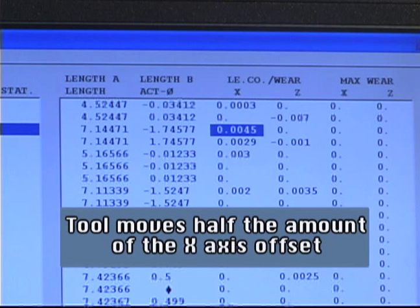The same is true of X-axis offsets on the Integrex. The tool moves only half the amount entered in the wear offset. This is important to remember when adjusting cross-drilling, milling, or other point machining processes.